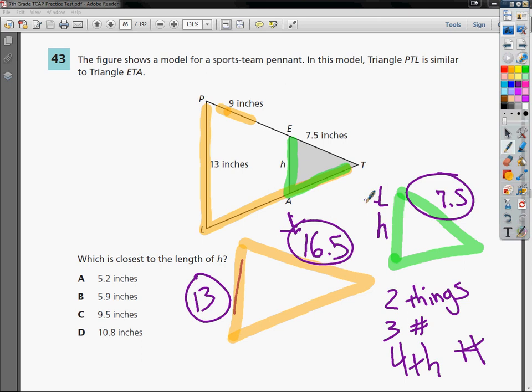I need to set up one ratio or fraction for the orange triangle. So my orange one is going to be 16.5 over 13. And I'm going to set it equal to a ratio for the green triangle. In this case, I have to determine whether 7.5 goes on top or the bottom. Well, since the side that's just like it is 16.5 and it's the on top one in the first ratio, I'm going to put 7.5 on top of the other. Then I've got my H here.